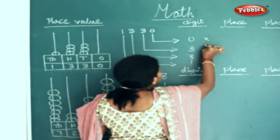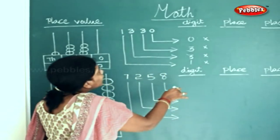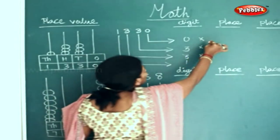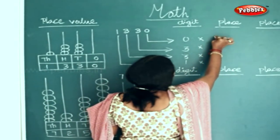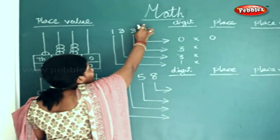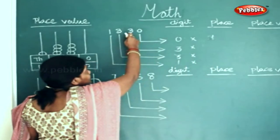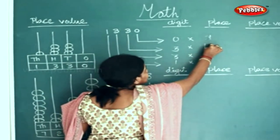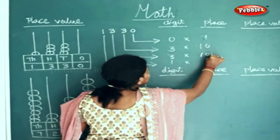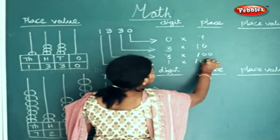Now I am putting a cross sign so that we can multiply it. In the place value, what do you have here? Zero. This is your ones place. This is your tens place. This is your hundreds place, and this is your thousands place.